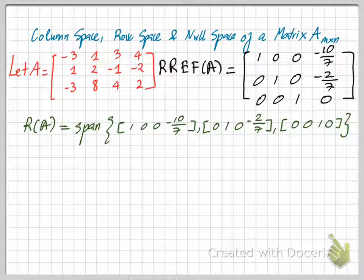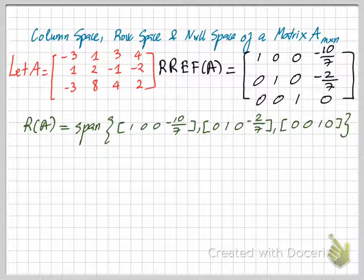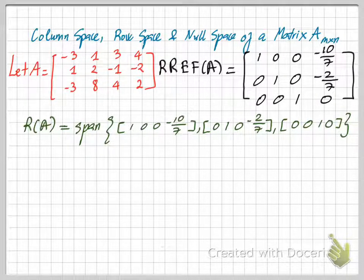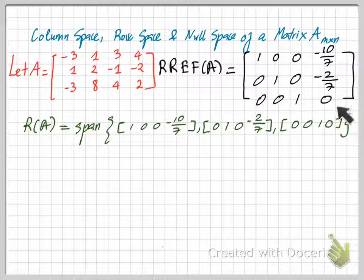So basically, the row space of A is the span of the row vectors of A. And since two row equivalent matrices share the same row space, we can just look at the reduced row echelon form of A to find the basis for the row space of A.